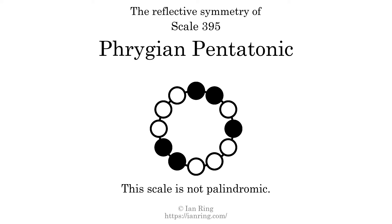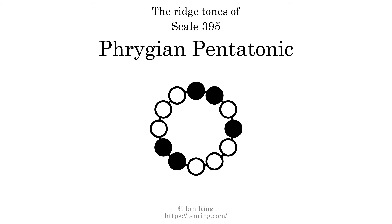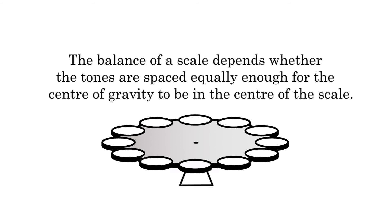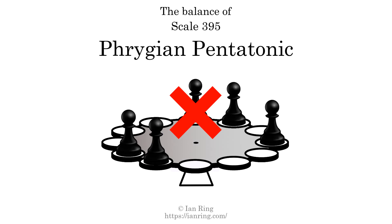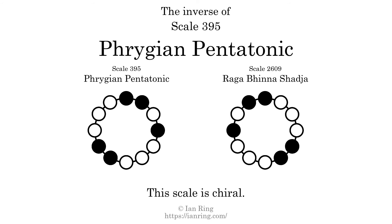This scale has no ridge tones. The balance of a scale depends whether the tones are spaced equally enough for the center of gravity to be in the center of the scale. This scale is not balanced. The inverse of a scale is a mirror image — it is what you get when the sequence of intervals is reversed. The inverse of this scale is scale 2609, also known as Rugga Bina Shadja. This scale is chiral; it cannot transform into its inverse by rotational transformation. This scale has no rotational symmetry.